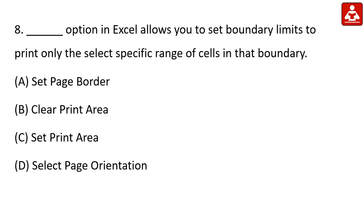The dash option in Excel allows you to set boundary limits to print only the selected specific range of cells within that boundary. In Microsoft Excel, this is used to set and print only the selected specific range of cells.